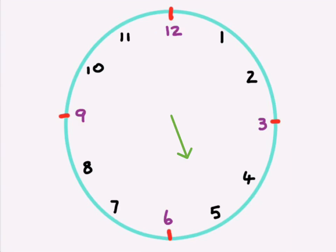But we first have to just show you how you're going to count in fives. You're going to count in fives from 12. So we're going to go 5, 10, 15, 20, 25, 30, 35, 40, 45, 50, 55, 60.